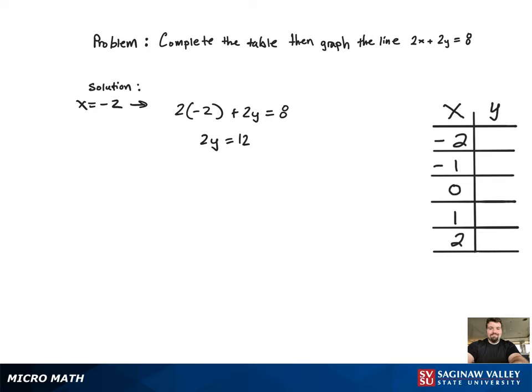Now we plug negative 2 in for x and we have to solve for y. And after some algebra, we get y equals 6, and that's going to be the corresponding y value for x equals negative 2 in the table.